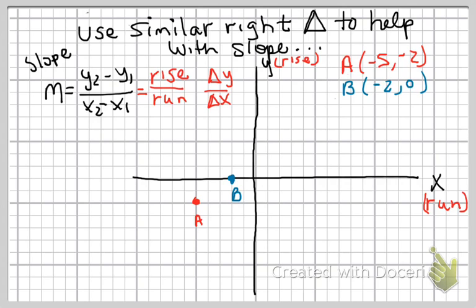And the X values run. I mean think about the X—the X is on the horizontal axis, it's going across. You run across the ground, rise you go up and down. So I have two points here and there's a couple ways to do this but we're going to use similar triangles to help us.